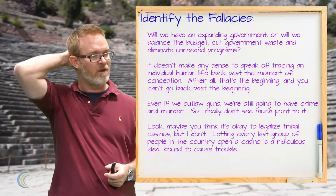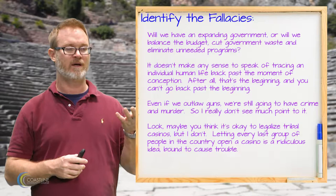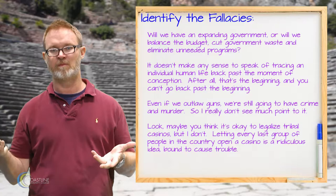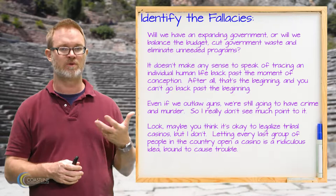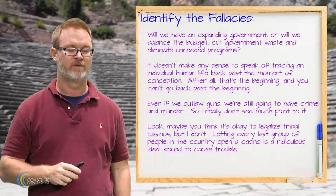Even if we outlaw guns, we're still going to have crime and murder, so I really don't see much point to it. Hopefully you can see that this one is a perfectionist fallacy. It looks like what we're trying to be persuaded of is that the only reason we would outlaw guns is if it completely wiped out crime and murder. But the reason you would want to outlaw guns is because it would make the world a safer place, not because it would completely do away with crime.